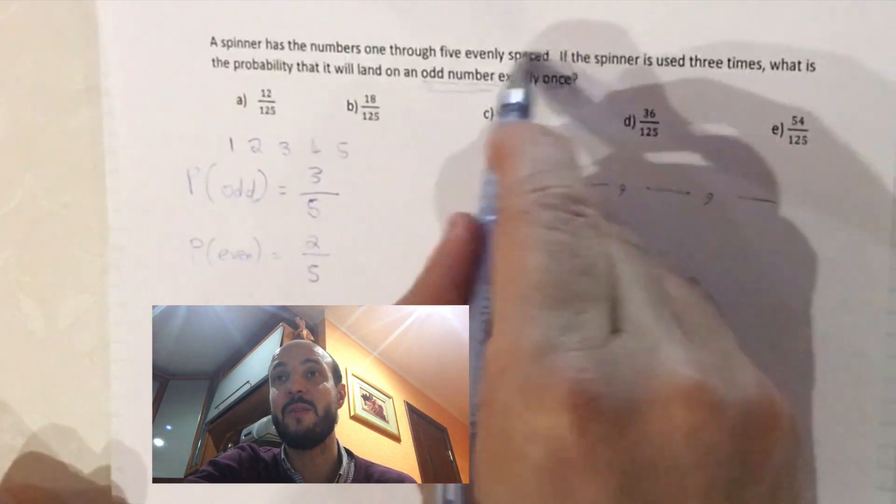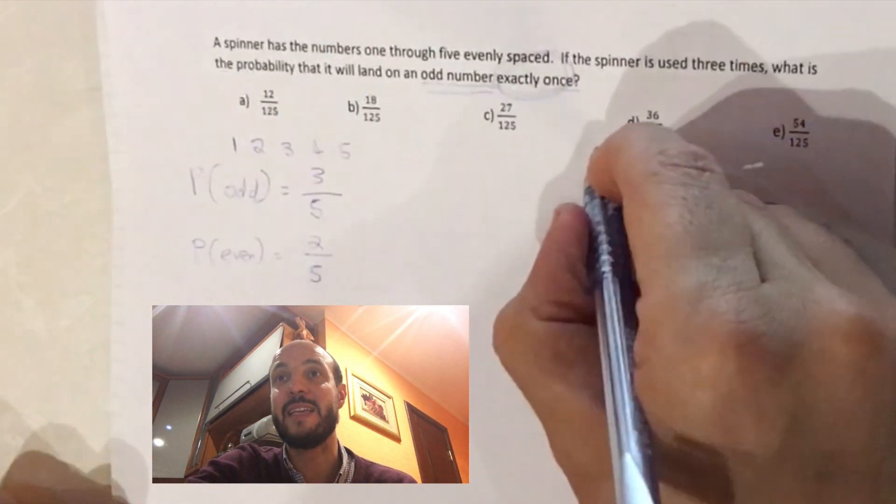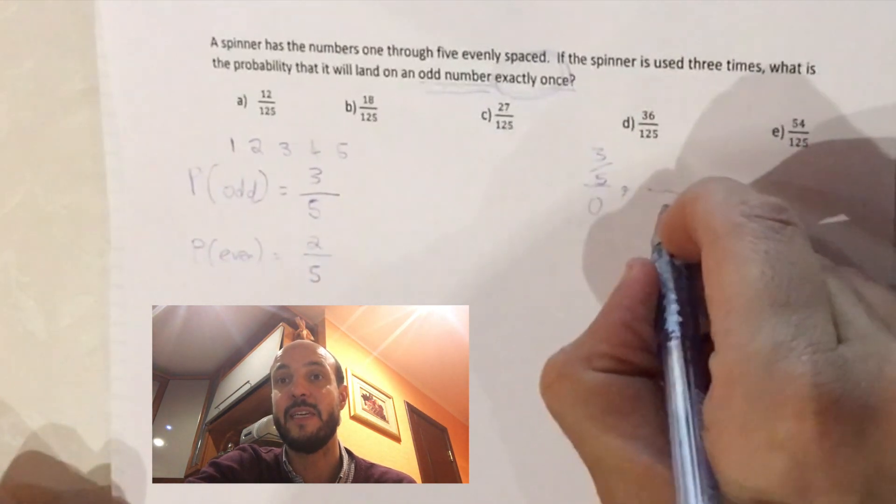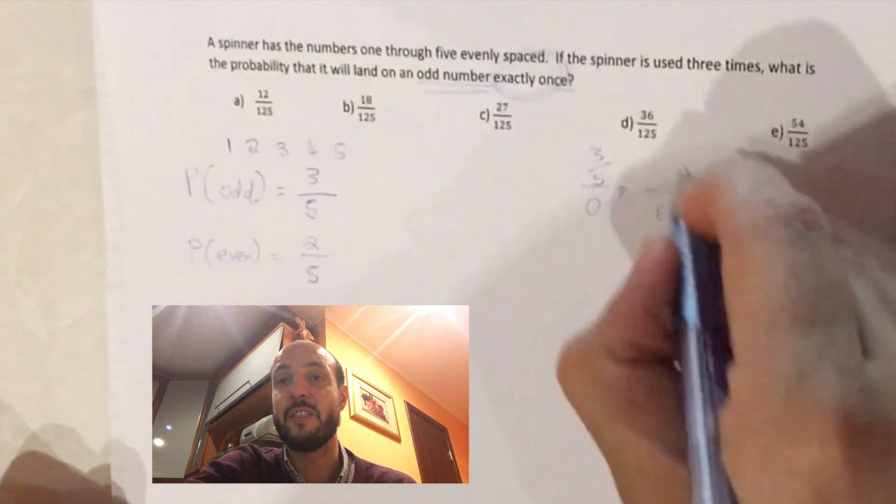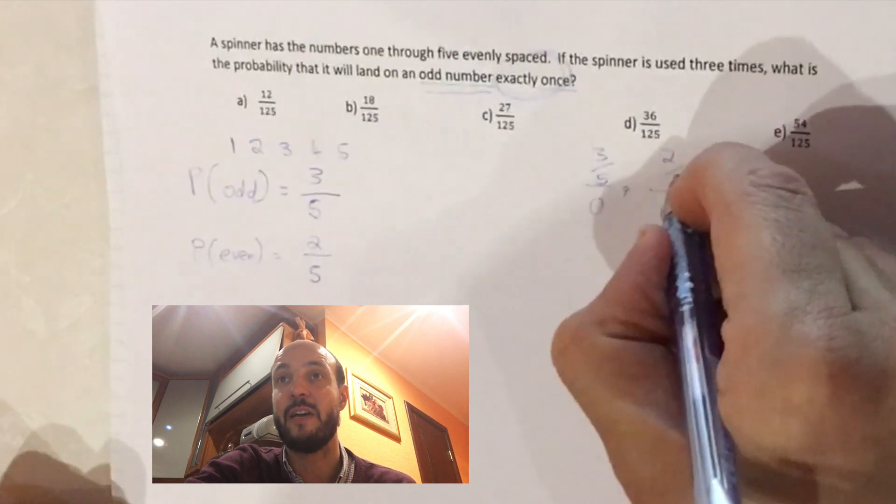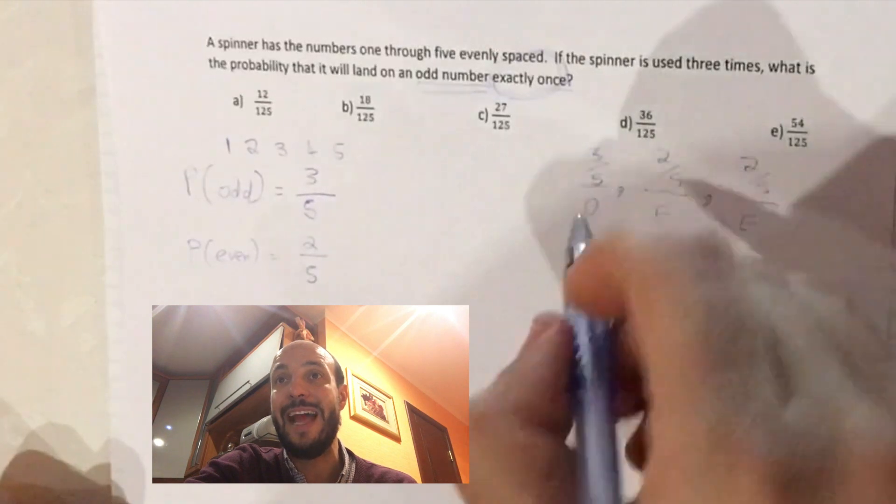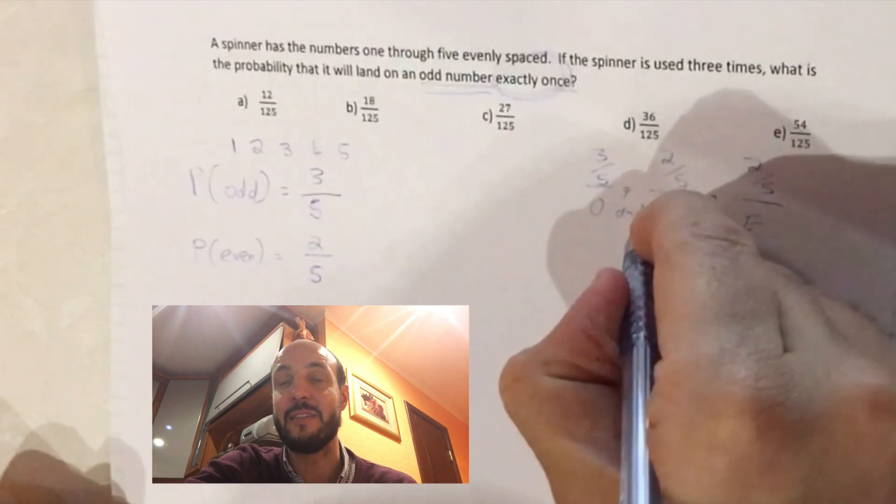We want to get exactly 1 odd, so of these 3 numbers let's say our first one is odd. So that has a 3 out of 5 probability. The other 2 have to be even, so that has probability of 2 out of 5 and 2 out of 5.